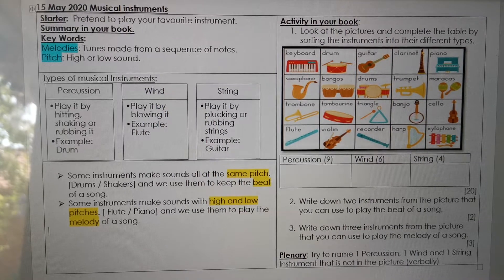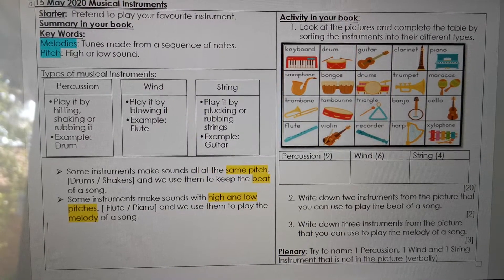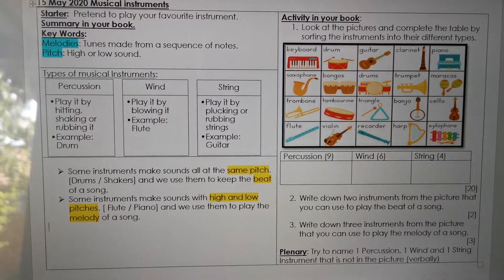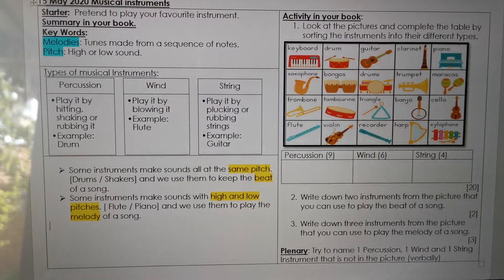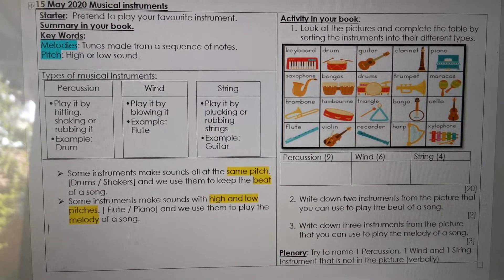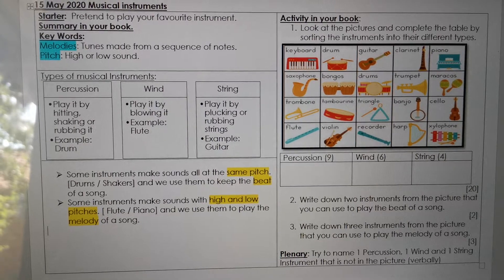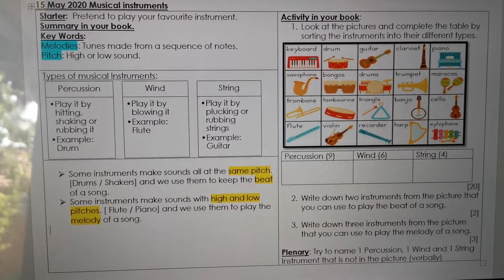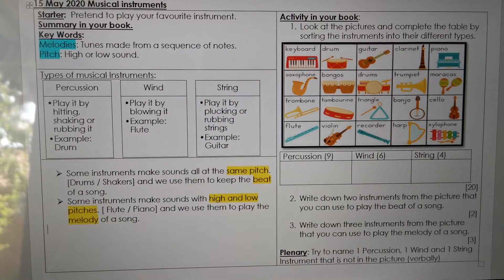We're going to do two keywords. The first keyword is melody. Melody is tunes made from a sequence of notes. Who can remember the notes? Do, re, mi, fa, sol, la, ti, do.